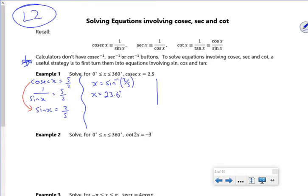Then you can just graph it on your calculator from 0 to 360. You've got a value there of 23.6 and the calculator should also return the other value which is 180 take away 23.6, so 156.4.